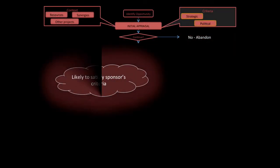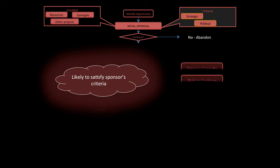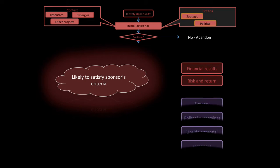The first thing with the initial appraisal is knowing: does this project satisfy the sponsor's criteria? The two most important criteria are financial results and the risk and return that you can get. Other criteria could be synergies, political constraints both inside and outside the company, upside potential, and the use of scarce resources.